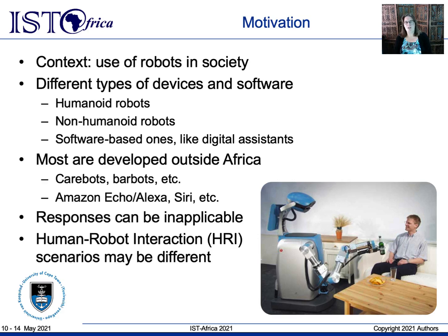I consider social robots here, not those in manufacturing plants with their associated ethics or job concerns. Even with just social robots, there are different types of hardware and software categorized as a robot — a machine that carries out tasks or actions automatically, that may or may not be human-like. Most of them are developed outside of Africa, and as a consequence their responses and purposes may not be applicable for our settings. For instance, Alexa uses the web to answer questions, but web content about Africa is limited and at times one-sided.